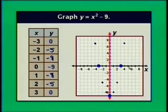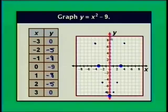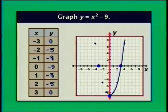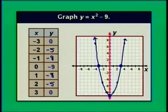Connecting the points gives us our parabola. Remember, the axis of symmetry is not part of the graph of the parabola, so I'm going to erase it. Here's the graph of y equals x squared minus 9.